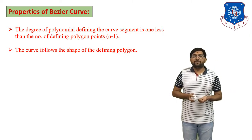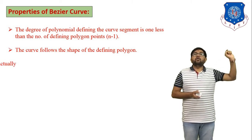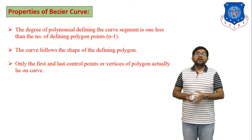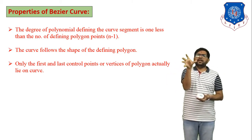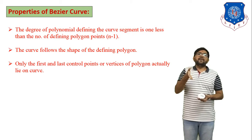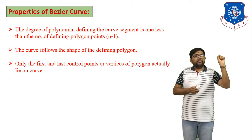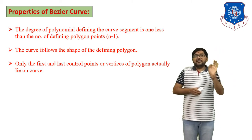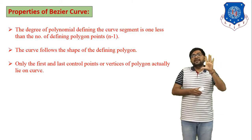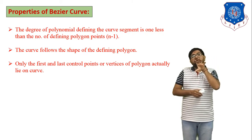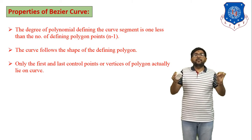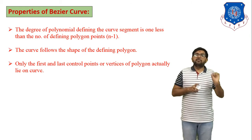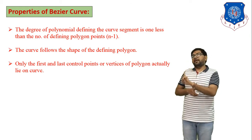Second property: the curve follows the shape of the defining polygon, following its path with its control points. Third property: only the first and last control points (vertices of the polygon) actually lie on the curve. All intermediate points act only as control points that shape the Bezier curve. The parametric value u = 0 at the first point and u = 1 at the last point.